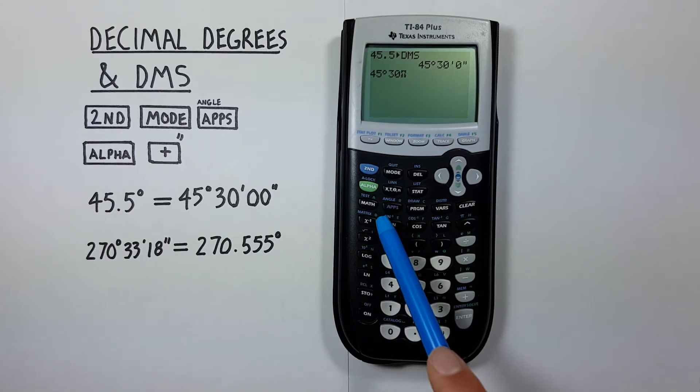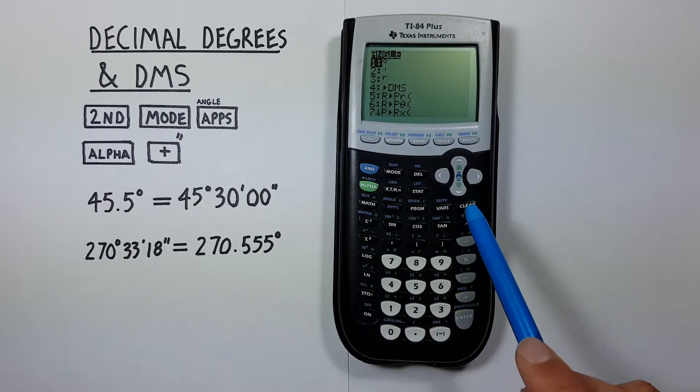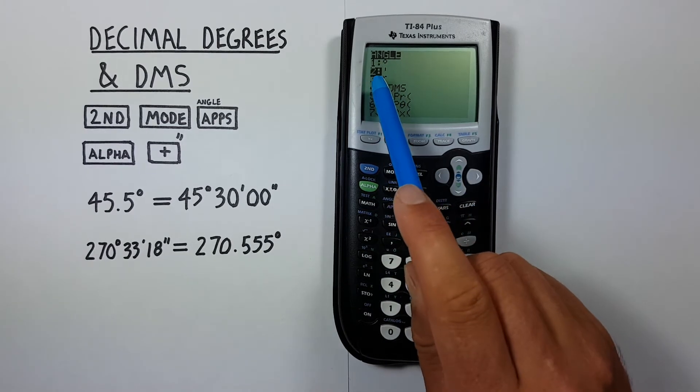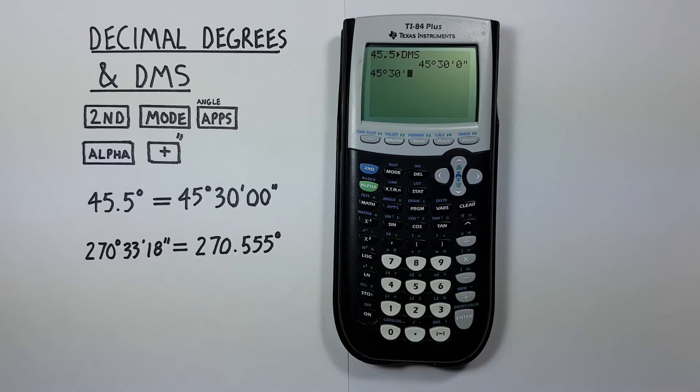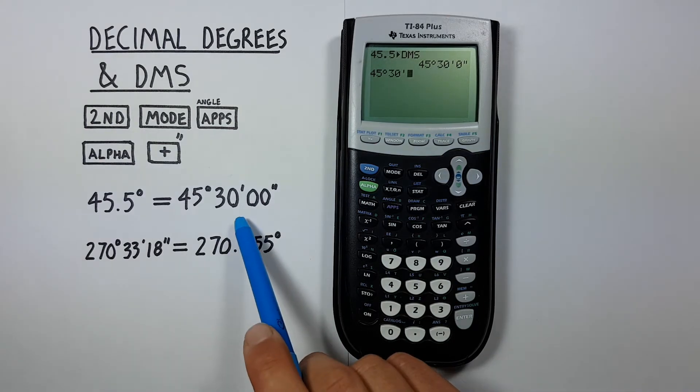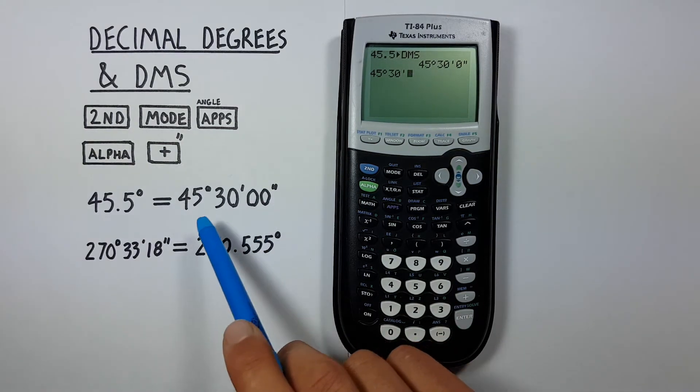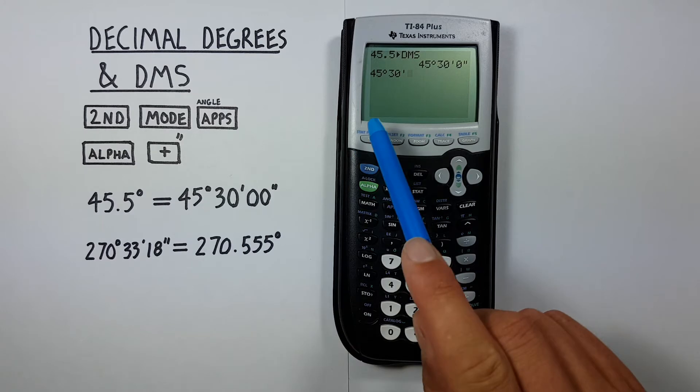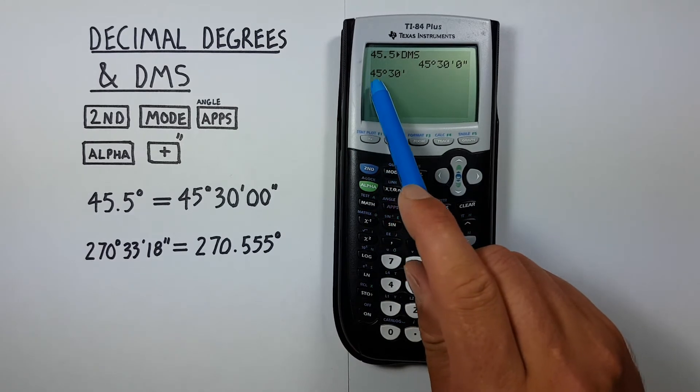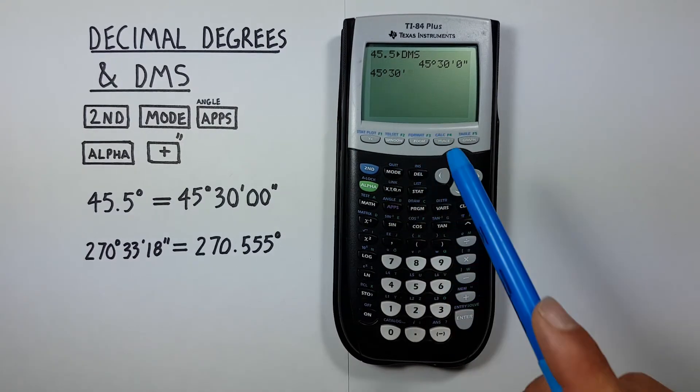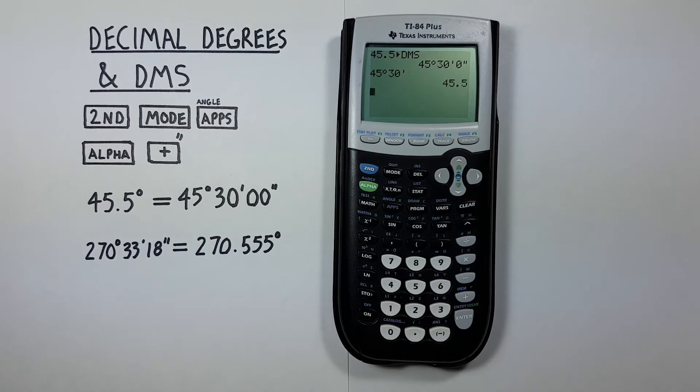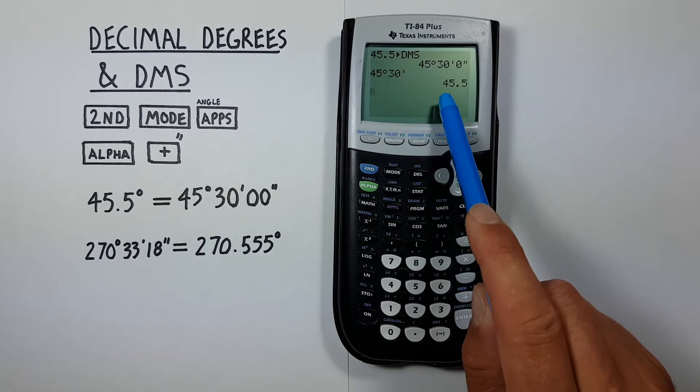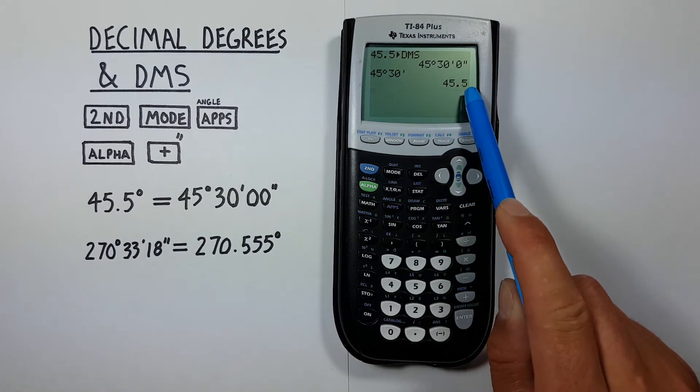Again to the angle menu. Scroll down to number 2. There's our minute symbol. And in this example we have 0 seconds, so we don't have to enter anything here. We have 45 degrees, 30 minutes entered. All we have to do is press enter. And there we go. 45.5 decimal degrees.